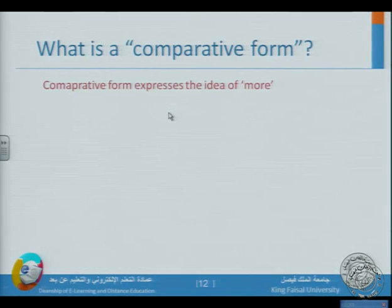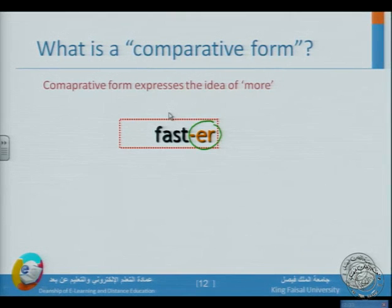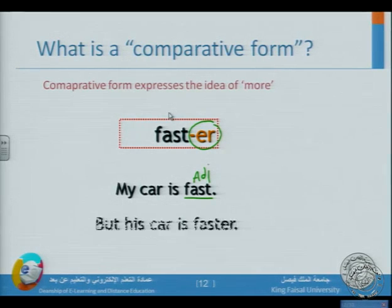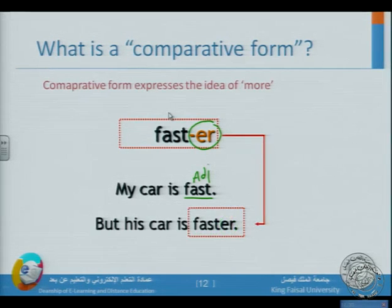The comparative form expresses the idea of 'more.' For example: 'fast' — if we add -ER it becomes 'faster.' The general rule for comparative form is we add -ER. 'My car is fast' is the adjective; 'his car is faster' means his car is more fast than mine — so we add -ER to 'fast.'